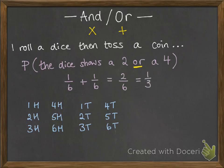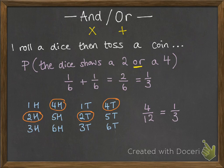which gives us two sixths, which cancels down to a third. And I'll show you on this list of outcomes that we've got. Here's all the ones that would give us a two or a four. There are four of them out of our 12 possibilities, which cancels down to a third.